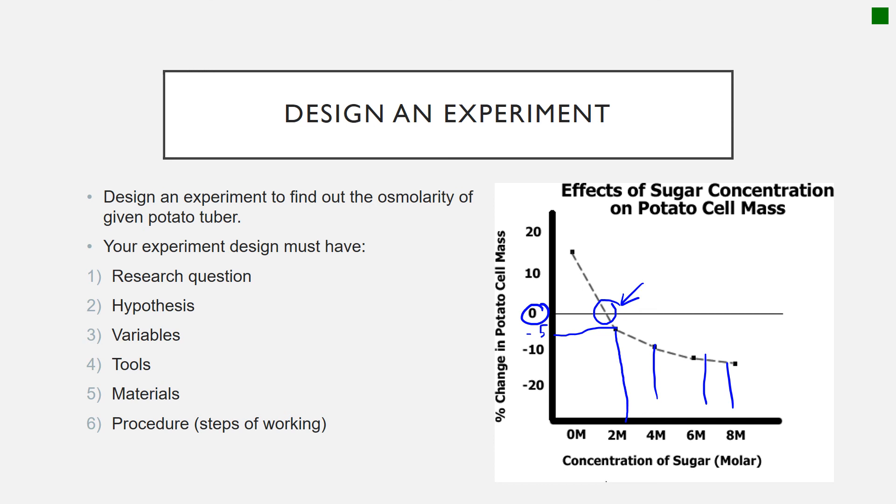Now again, in designing an experiment, you must have these elements like what happened in grade 10. In quarter 4, you have learned about this for returning students in SPH. A design must have research question, hypothesis, variables, tools, materials, and procedures or steps of working. Now we will talk about this one by one tomorrow while you start to plan your method or design of experiment.